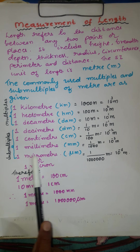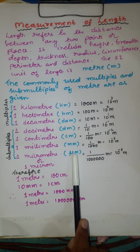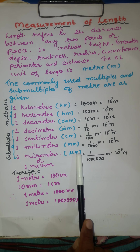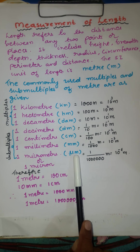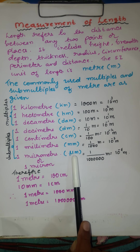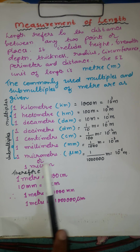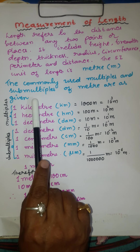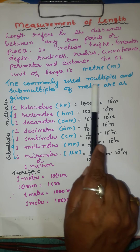Look at this — micrometer. When we think of a virus or any minute organism or minute things, we use the unit micrometer, also called micron. Let us know about the commonly used multiples and submultiples of meter.